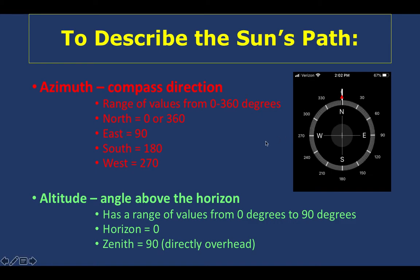Azimuth is measured in the plane of the Earth's surface. Altitude is how high the sun gets above the horizon, measured in degrees as an angle. It can range from zero degrees — where it's right on the horizon — to 90 degrees, which is directly above your head. Anyone in the United States would never actually see an altitude that gets to 90 degrees; there's no place in our country where the sun is ever directly overhead. If we know these two things, we can describe the position of the sun at any spot in the sky.